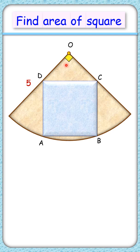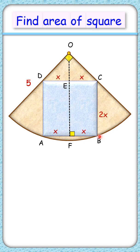Let's drop a perpendicular from the center on chord AB. If the side length of the square is 2x cm, then FB will be x cm. By symmetry, this angle will be 45 degrees.